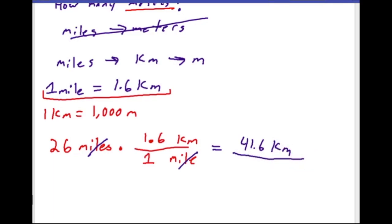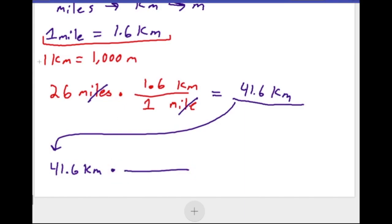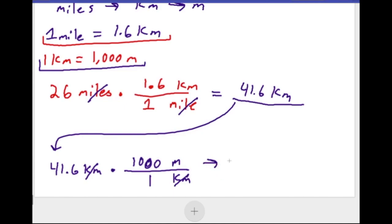But 41.6 kilometers is not our final answer — the question asked for meters. So we take 41.6 kilometers and multiply by our next ratio: one kilometer equals 1,000 meters. Kilometers on top here means kilometers goes on the bottom, with 1,000 meters on top over one kilometer. Kilometers cancel out, and 41.6 times 1,000 gives us 41,600 meters.